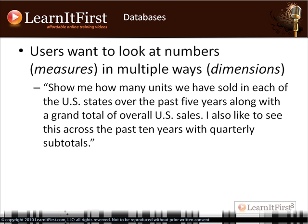A quick example: show me how many units we have sold in each of the U.S. states over the past five years, along with a grand total of overall U.S. sales. I'd also like to see this across the past 10 years with quarterly subtotals. So we're looking at different dimensions — we've got a time dimension and a geography dimension. The measure is units sold. We have two different dimensions and a single measure.